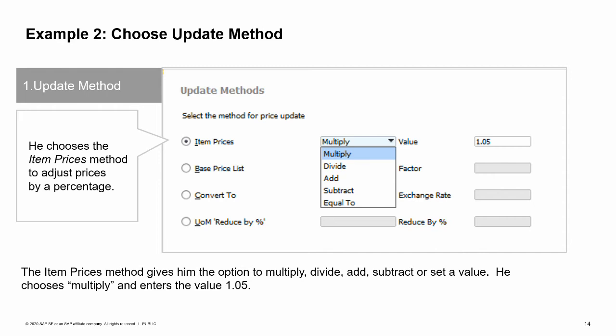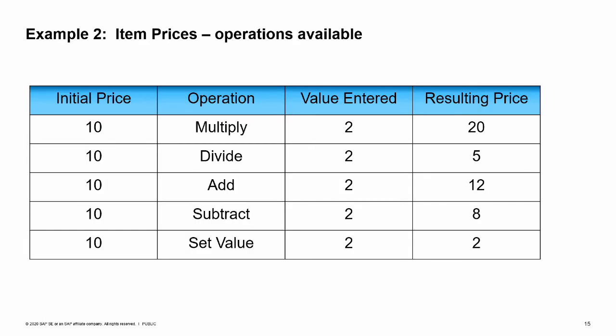The item prices method gives us the option to multiply, divide, add, subtract, or set a value. We choose multiply and enter the value 1.05. In our example, we use the option to multiply the price; however, there are four other options. Let's look at how they work.